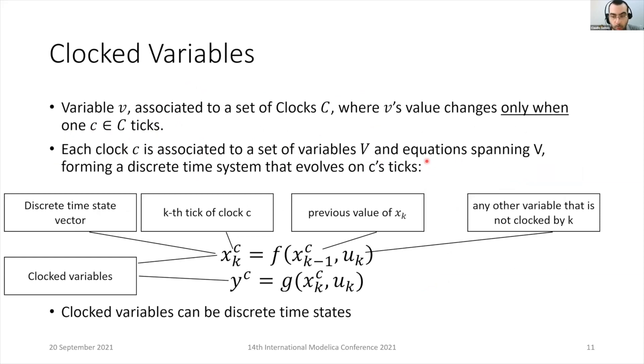And the equations that span those variables. This all forms a discrete time system that evolves whenever the clock ticks. And such discrete time system can be written in this form, representing the evolution of the variables whose next value depends on the previous value.